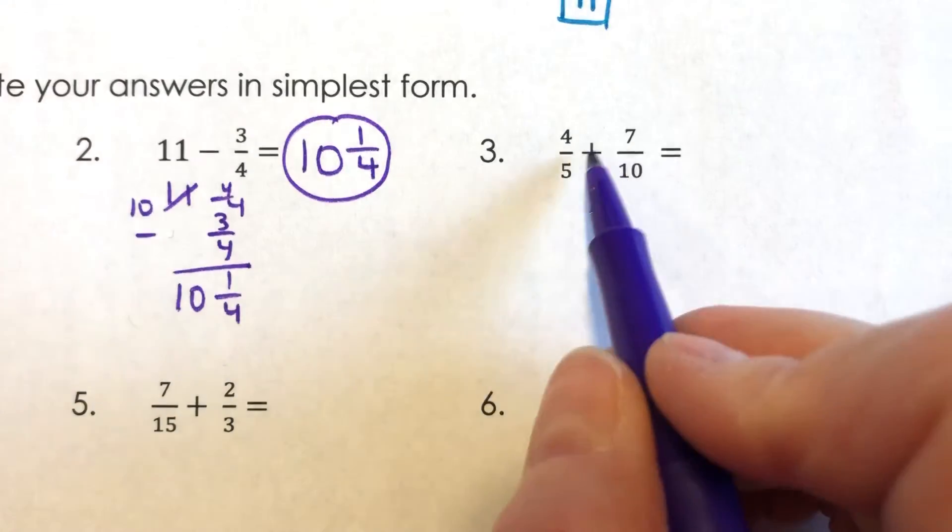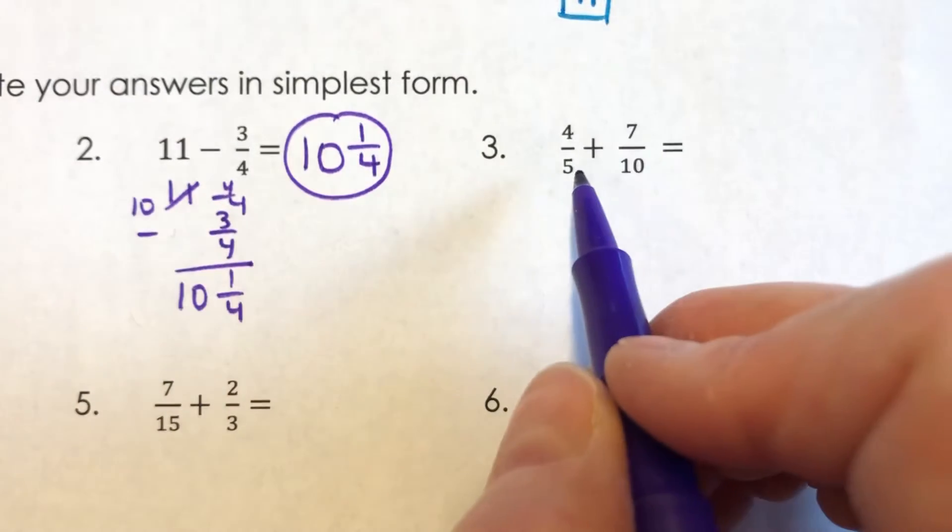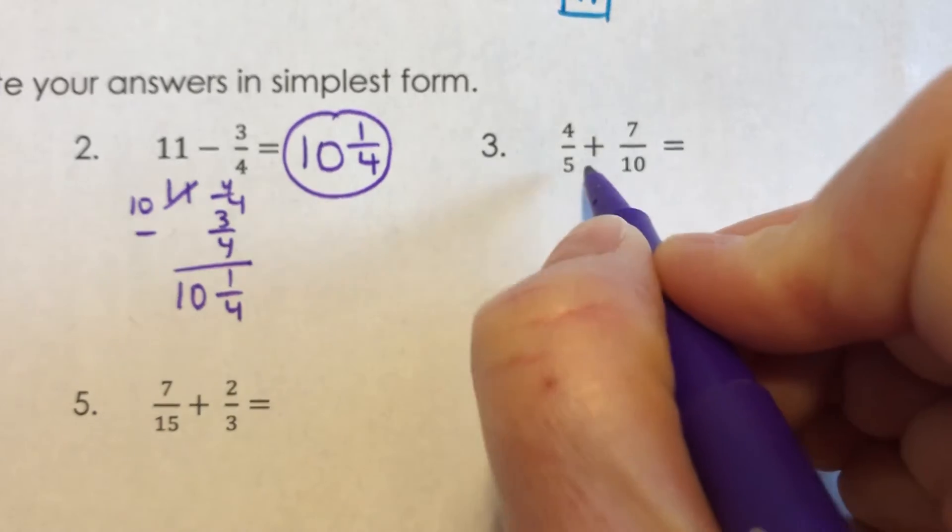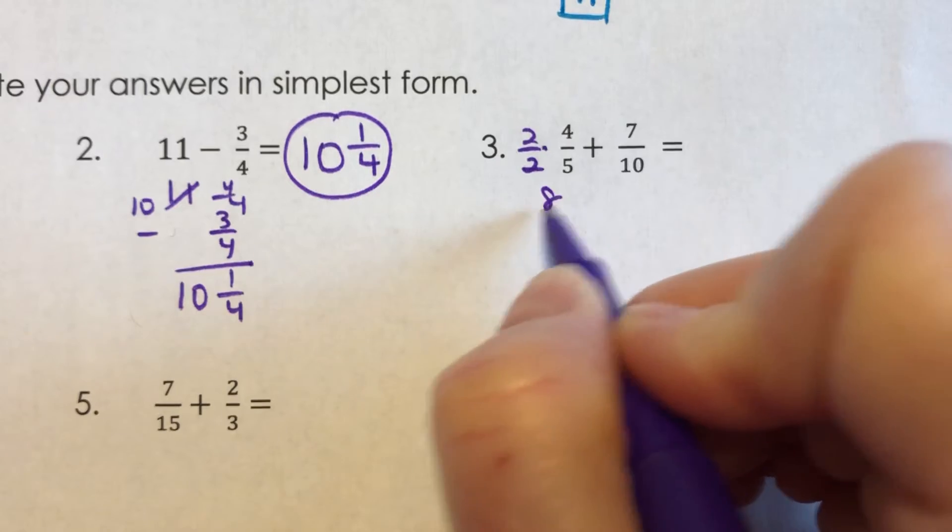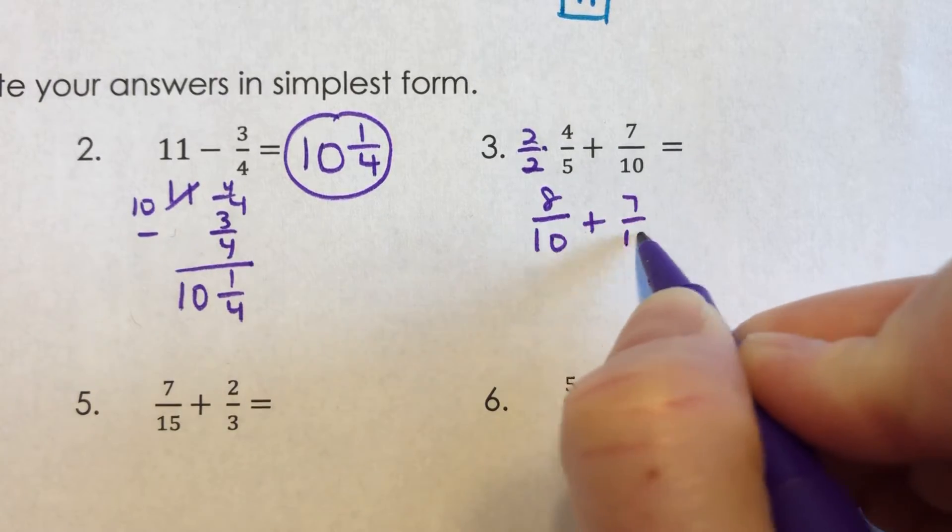For number three, it's addition. I do need a common denominator and I'm going to ask myself, is there something I can multiply the lower number by to get the higher denominator? Yes. Five times two is 10. So I'm going to multiply four fifths by two over two. Four times two is eight. Five times two is 10. So I have eight tenths plus seven tenths, which eight plus seven is 15 tenths.